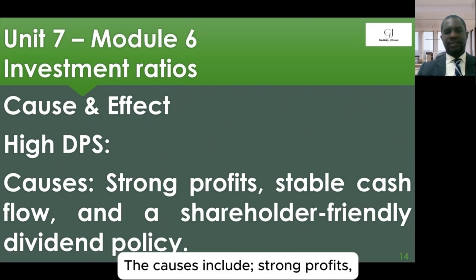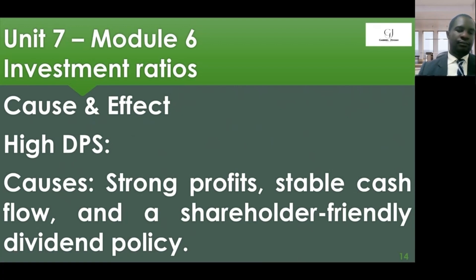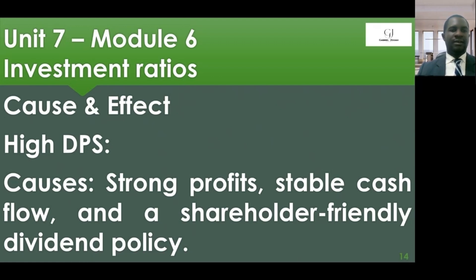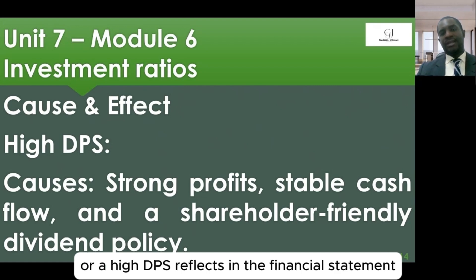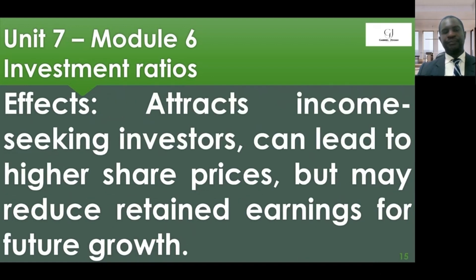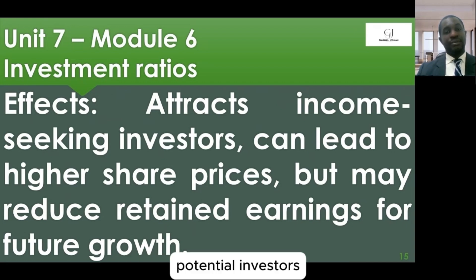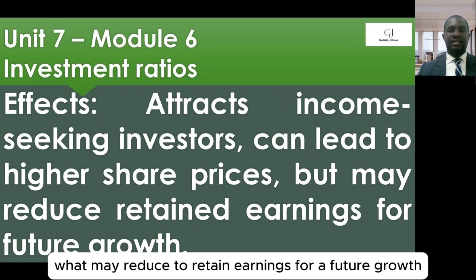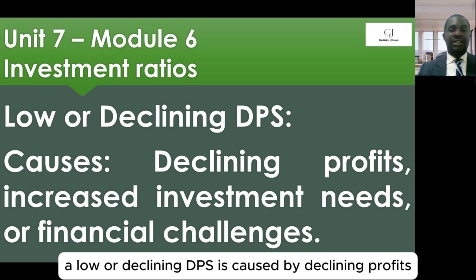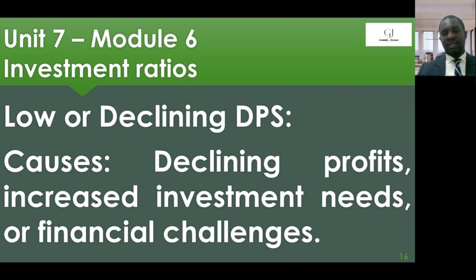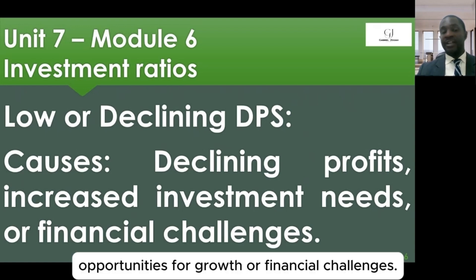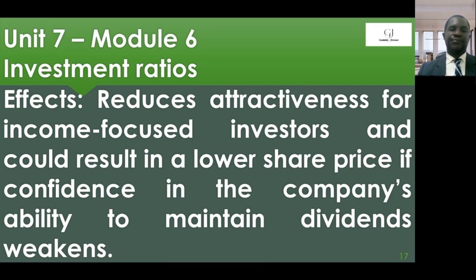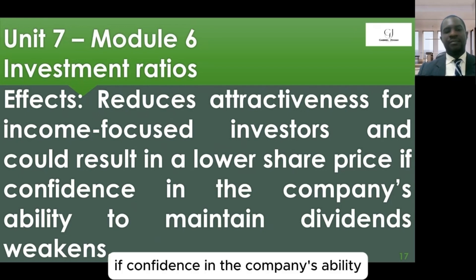The causes of a high DPS include strong profits, stable cash flow, or a shareholder-friendly dividend policy. Its effects include attracting income-seeking and potential investors and analysts, and can lead to higher share prices, but may reduce retained earnings for future growth. A low or declining DPS is caused by declining profits, increased investment needs, expansion opportunities, or financial challenges. Its effects include reduced attractiveness for income-focused investors and could result in a lower share price if confidence in the company's ability to maintain dividends falls.